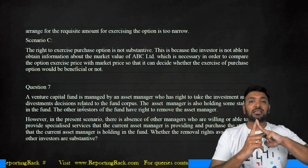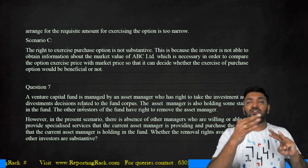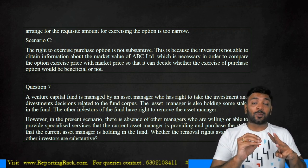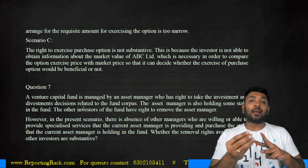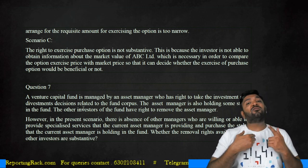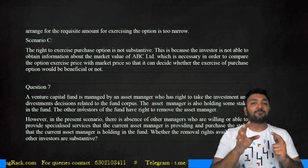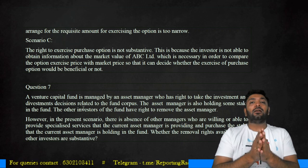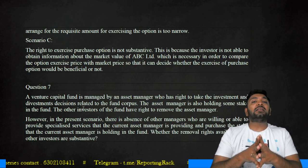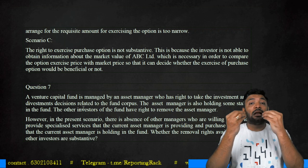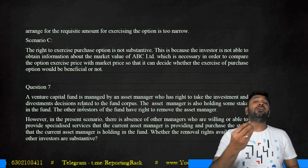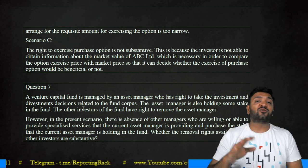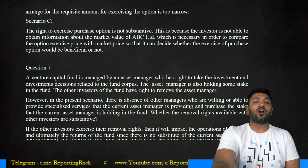To summarize all three scenarios: Scenario 1 — the exercise price is much higher than the current market price and the company is expected to make losses, so not substantive. Scenario 2 — the current market price equals the exercise price and profits are expected, but you must exercise within one month and it is not practical to arrange the funds, so not substantive. Scenario 3 — you have a right to acquire another 30%, the company is expected to make profit, but you cannot reliably identify the current market price, so you cannot determine whether exercise is beneficial. Therefore, all three scenarios result in the right to purchase further equity being not substantive.